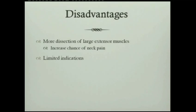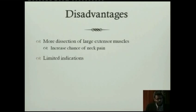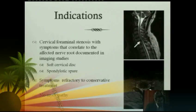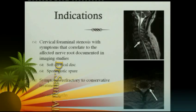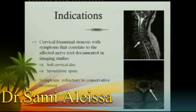The disadvantages include, especially with the open technique, more muscle dissection leading to higher chance of neck pain — partially addressed by minimally invasive techniques. But the most important disadvantage is the limited indication. You must be very precise in patient selection to get the best outcome. It is indicated for soft lateral disc herniation or foraminal spondylosis isolated to the foramen, in patients who failed conservative treatment.